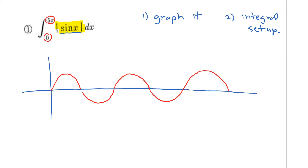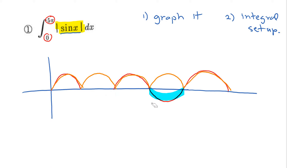There's a very basic graph of just y equals sine x. Now we need to take a look at the absolute value of sine x. When we're dealing with the absolute value of sine x, we always take the part of the graph that's underneath the x-axis and reflect it across the x-axis. So if I reflect it, this is what the graph would look like — that's the graph of y equals the absolute value of sine x.